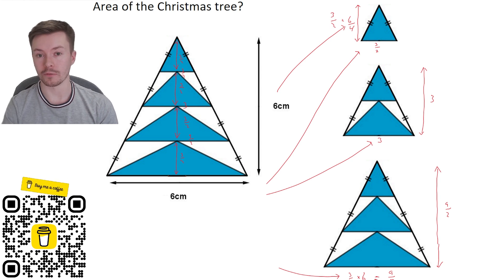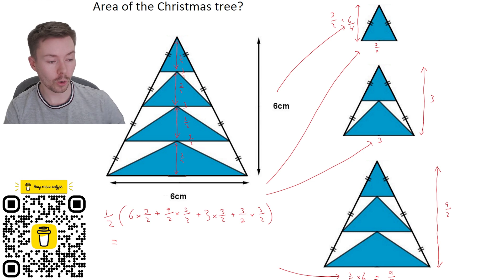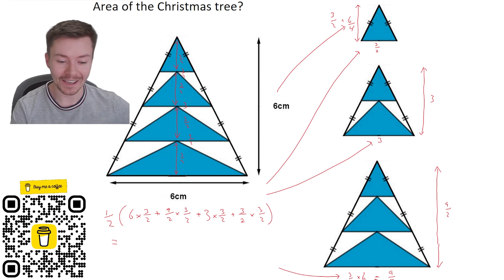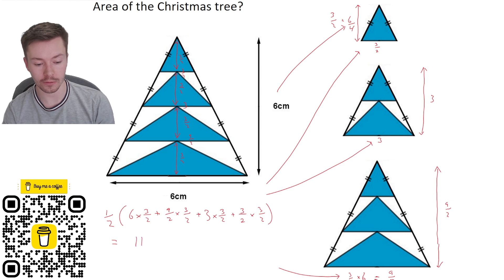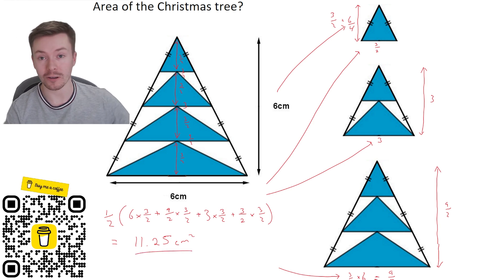So all of these are going to be half. It's going to be half times the base times by the height. So I'm going to do a half times the base times the height of each of them. So I'm going to do a half of six times by three over two. So that would be the bottom triangle. Plus nine over two times three over two. Plus three times three over two. And the last one is three over two times by three over two. And so I put that all into my calculator. And what I get, what I should get is 11.25 centimeters squared. And so that is the area of the Christmas tree.